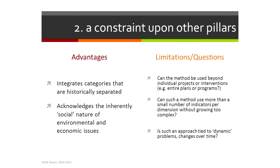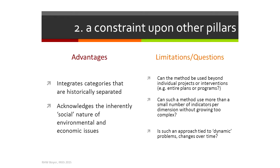The advantages of this approach are that it integrates categories that have been historically and institutionally separated, and it acknowledges the inherently social nature of environmental and economic issues. Limitations include: can the method be used beyond individual projects or interventions? Can we use more complex indices to proxy for social sustainability? Can we integrate more rich variables to symbolize it? And how do these things change over time? There are data limitations to this approach.